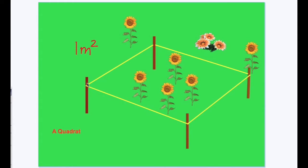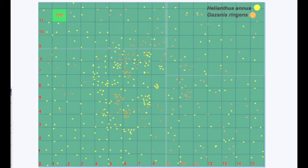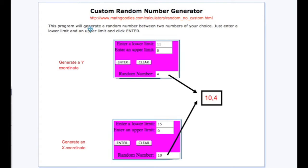A quadrat is a square frame. It could be made of wood, PVC pipe, or simply four sticks and some string. This particular quadrat is one square meter in size. Using a measuring tape, the students set up an imaginary grid in the 15 meter by 11 meter area of the plot. Next they accessed a random number generator on their computers to generate a random x coordinate and a random y coordinate.